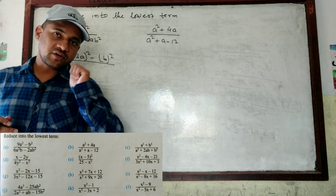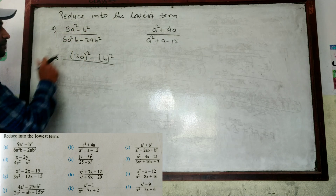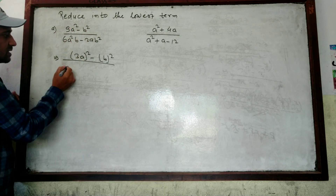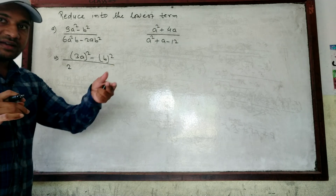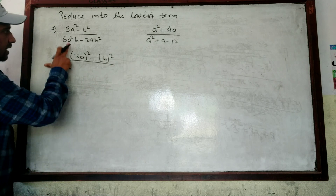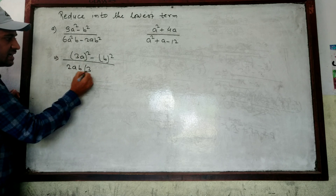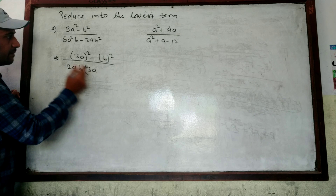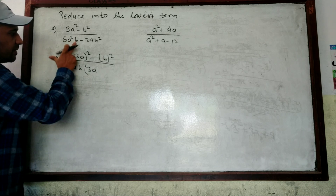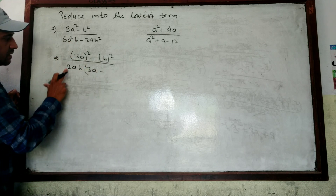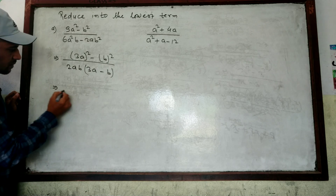As I told you before: if common, first take common, then use formula or factorize. Here in the numerator there is no common, so we use the formula. For the denominator 6a²b minus 2ab²: the common factor for 6 and 2 is 2, common for a² and a is a, and common for b and b² is b. So taking out 2ab, we get 2ab(3a minus b) in the denominator.